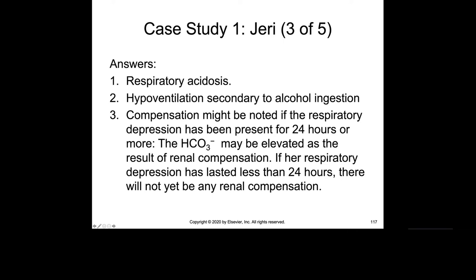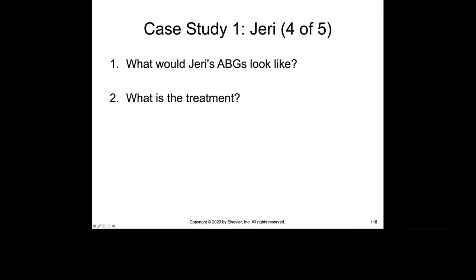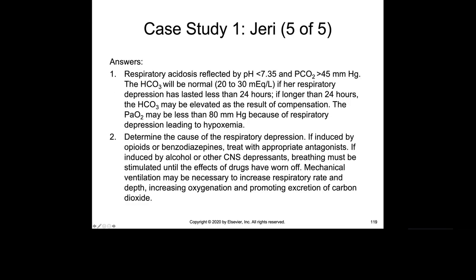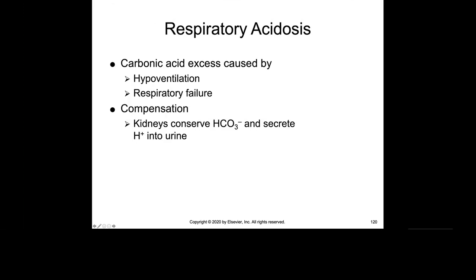Here are the answers for Jerry's case. Respiratory acidosis is carbonic acid excess caused by hypoventilation or respiratory failure. It compensates with the kidneys trying to conserve bicarbonate and secreting hydrogen into the urine.